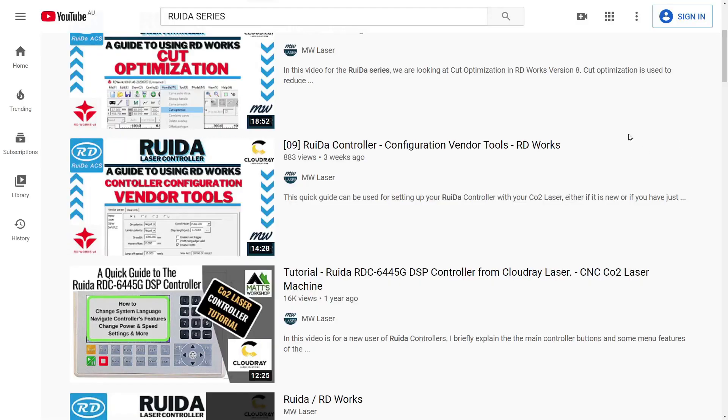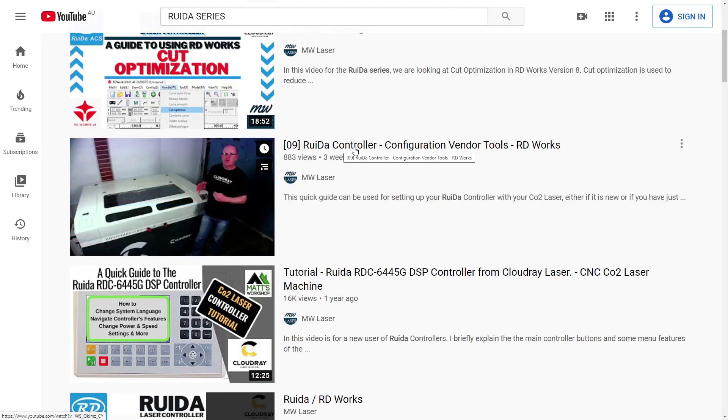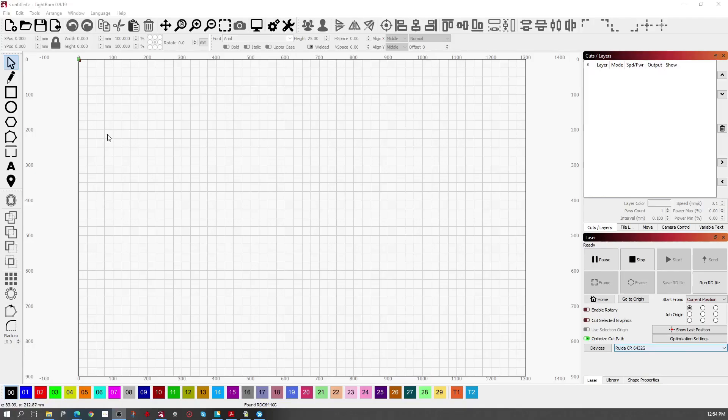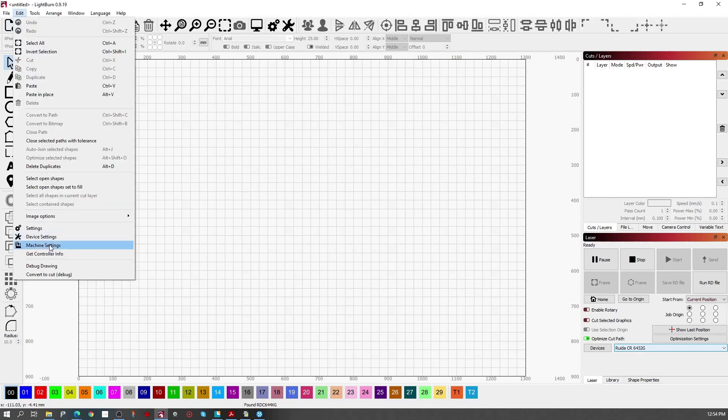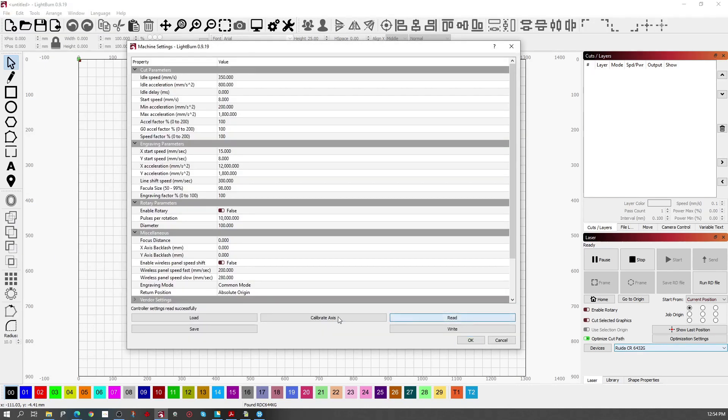On my YouTube channel you'll find this video here called RUIDA controller configuration of vendor tools. You'll need to follow this in order to set up the size of the machine itself as well as other settings for your laser controller. Now if you'd like to do your configuration in Lightburn rather than RDWorks this is possible. You're going to edit machine settings, read the information from the controller.